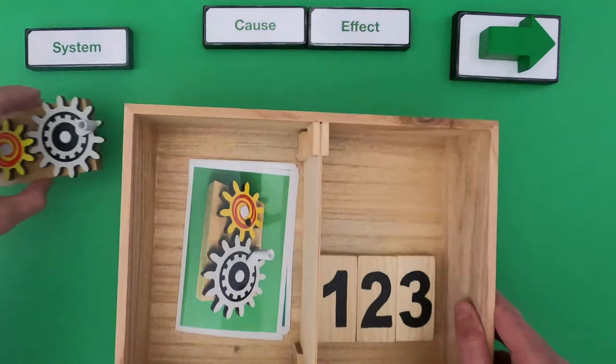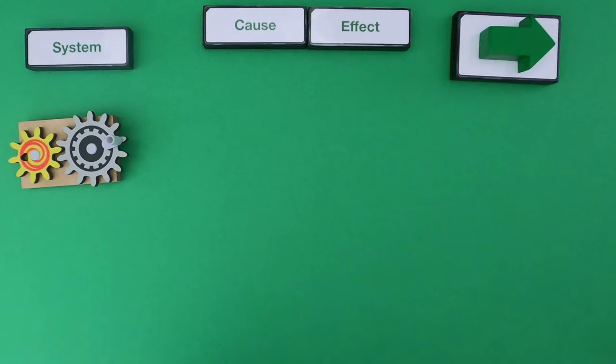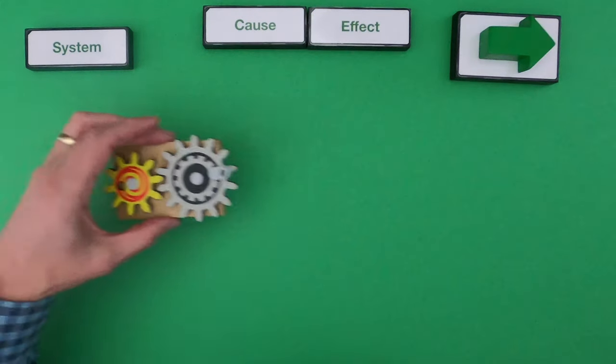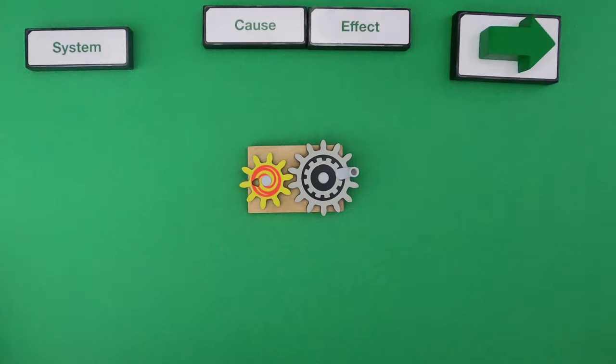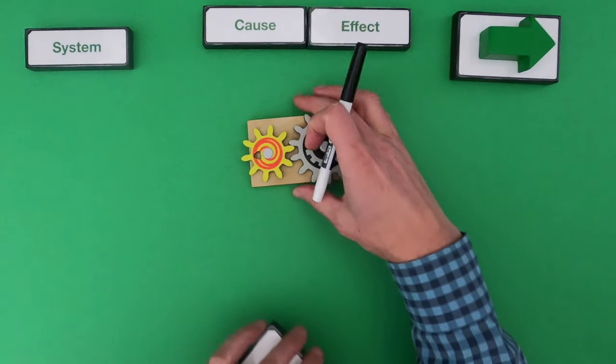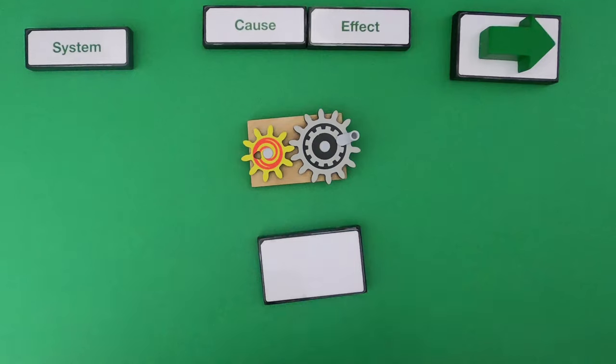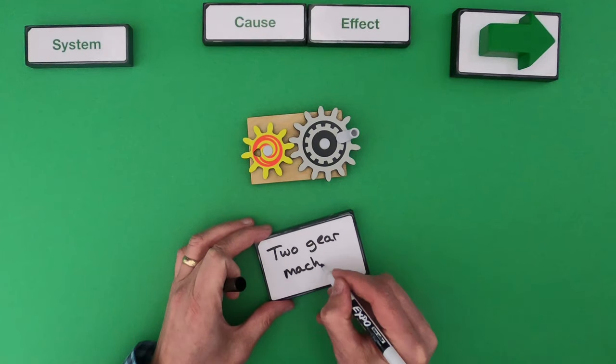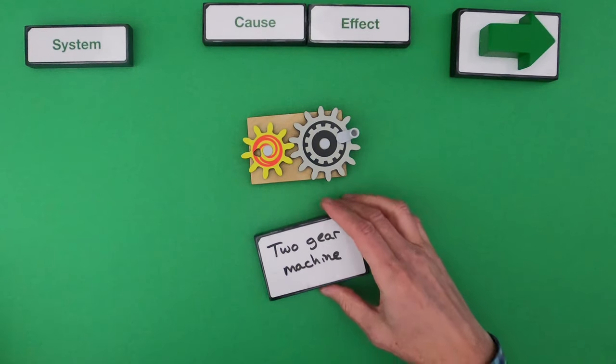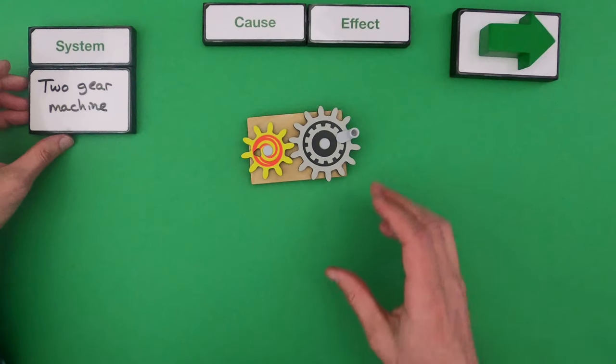And so the system that we're going to deal with is going to be this two-geared machine. First thing if you're ever digging into concepts, you should always identify what's the system. So in this case the system is going to be the two-gear machine. So I'm going to put this up here with system.